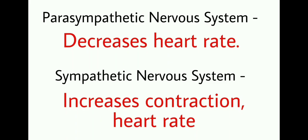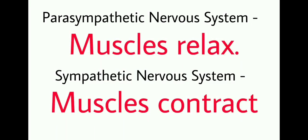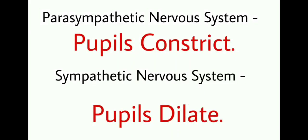The sympathetic nervous system increases heart rate and contractions, whereas the parasympathetic nervous system decreases heart rate. With the effect of the sympathetic nervous system, bronchial tubes dilate; with the parasympathetic nervous system, bronchial tubes constrict. The parasympathetic nervous system relaxes the muscles, while the sympathetic nervous system contracts the muscles. The parasympathetic nervous system constricts the pupils, while the sympathetic nervous system dilates the pupils.